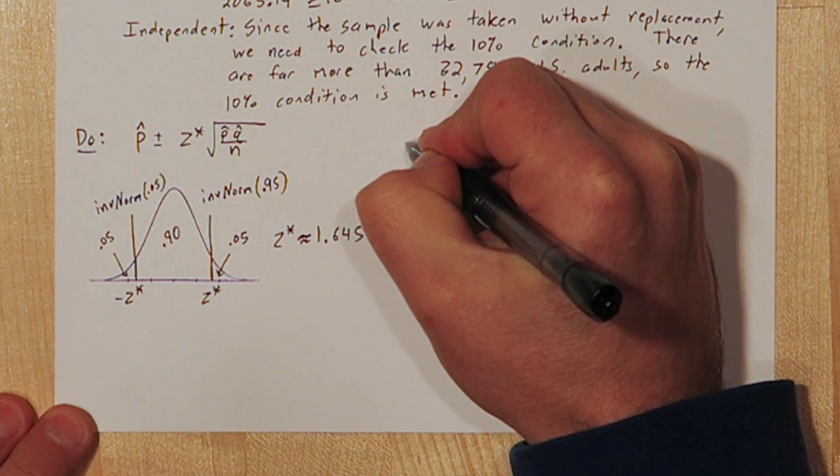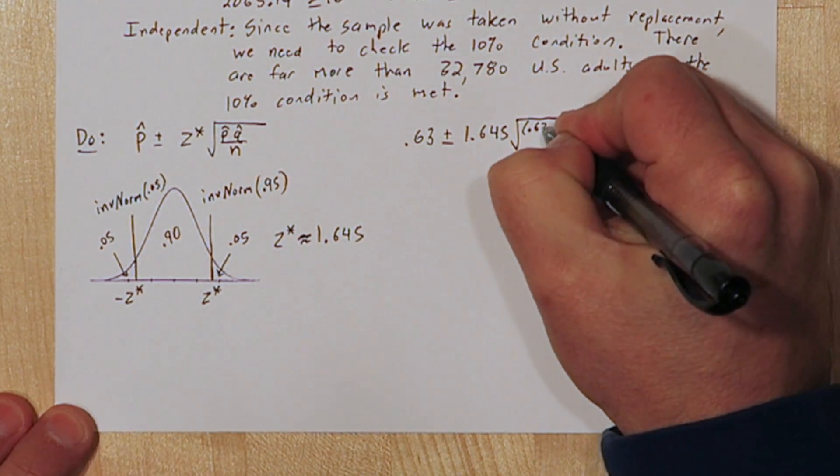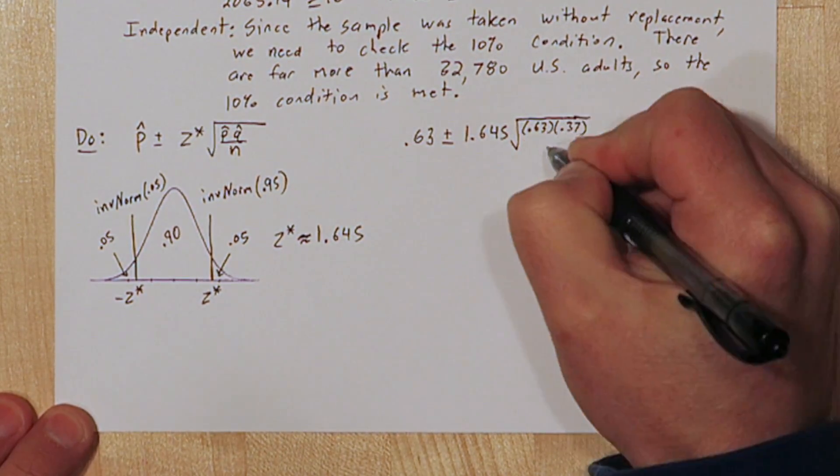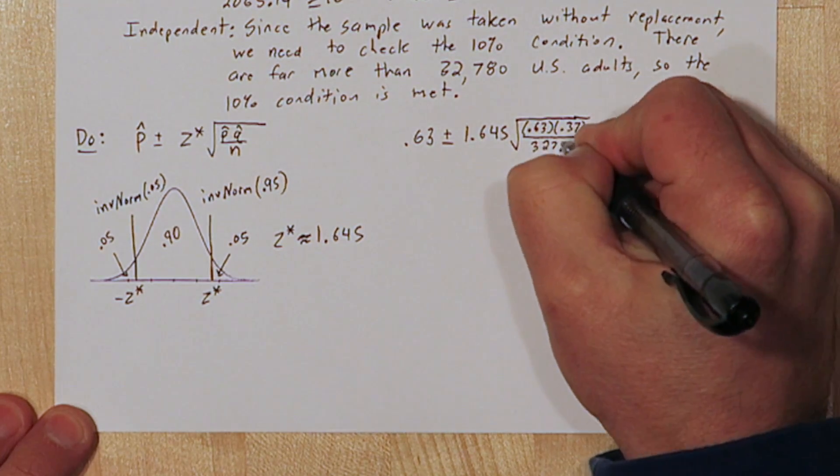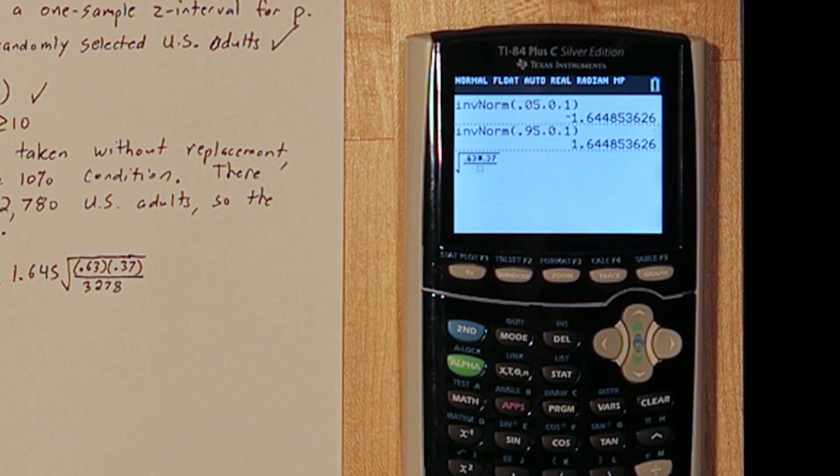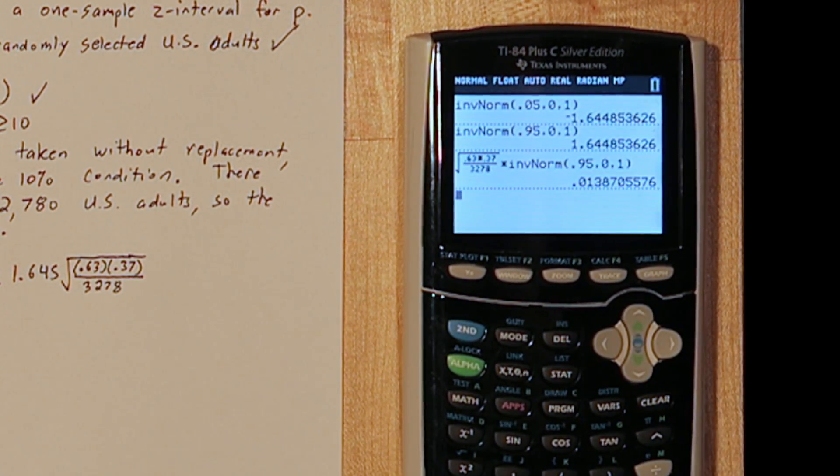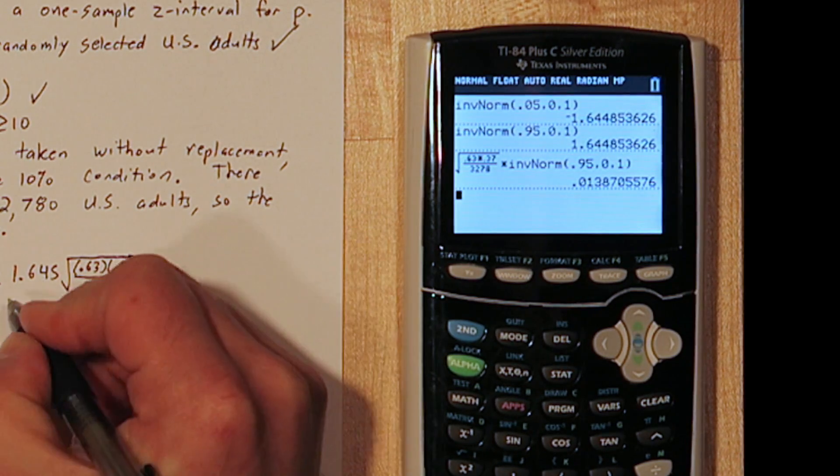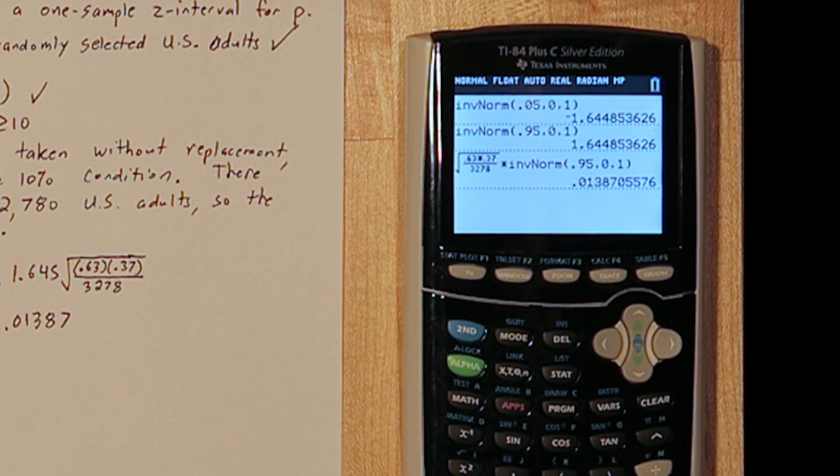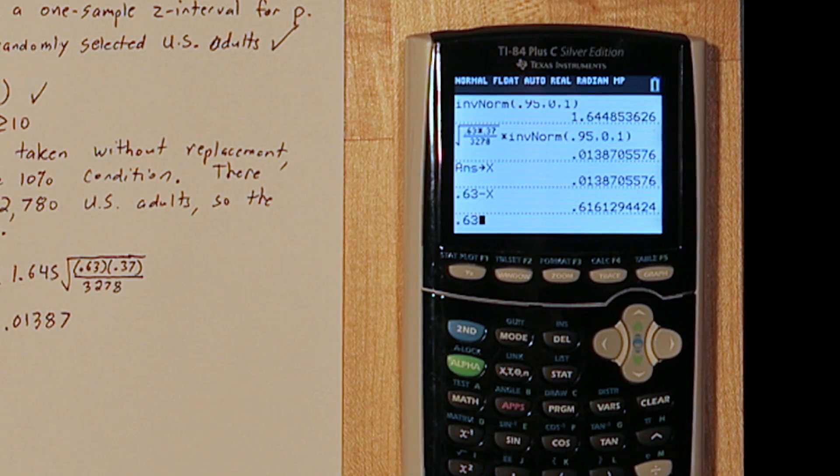We're going to take our point estimate of .63 and add and subtract the margin of error. The margin of error is composed of the critical value times our standard error. In this case, our margin of error is .01387. If we store this value of x, we can easily add and subtract it from .63 to make our interval. So our interval is .6161 to .6439. Always round the lower limit of the interval down and the upper limit up.